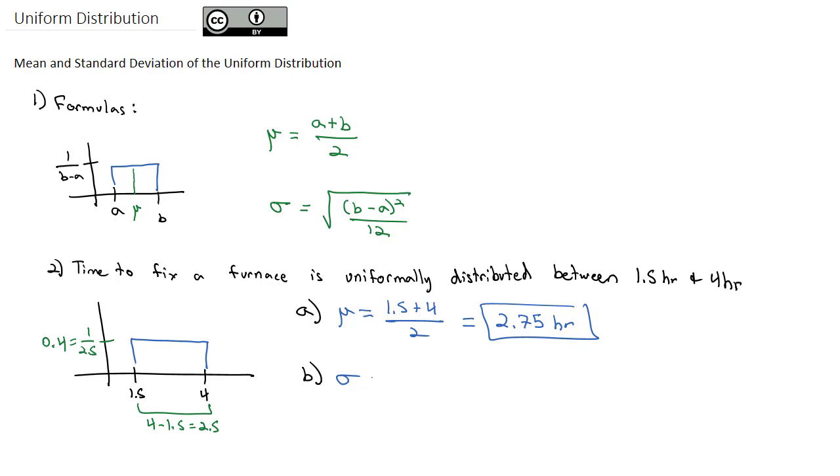If we wanted to find the standard deviation of the fixing times for these furnaces, we use our standard deviation formula, which is the square root of the top, 4, minus the bottom, 1.5, squared, divided by 12. We can put that in our calculator and we find out the standard deviation of fixed times is 0.7217 hours.